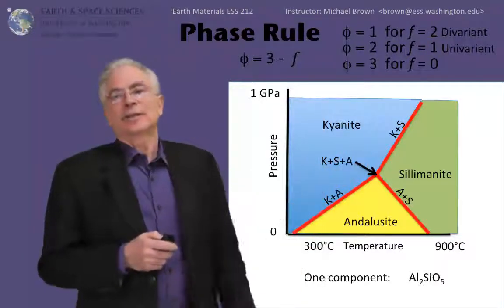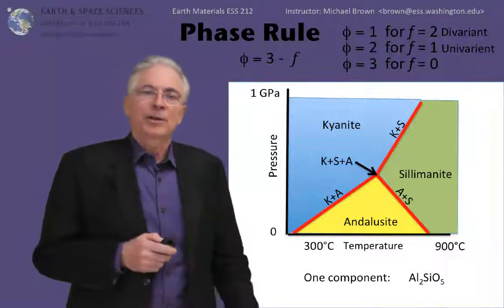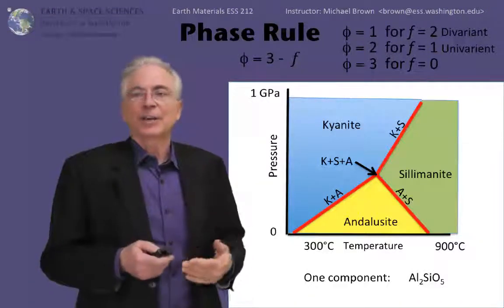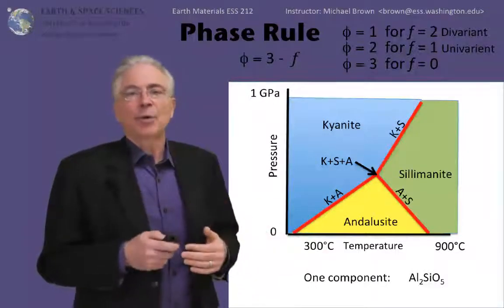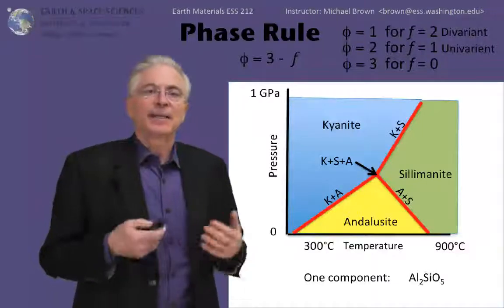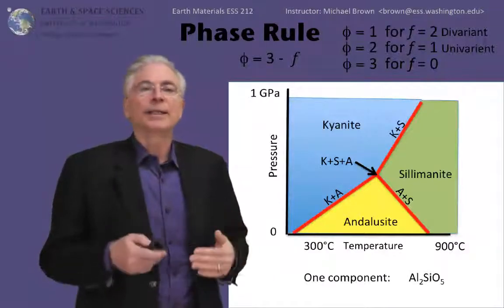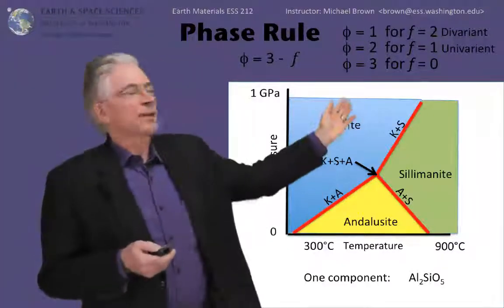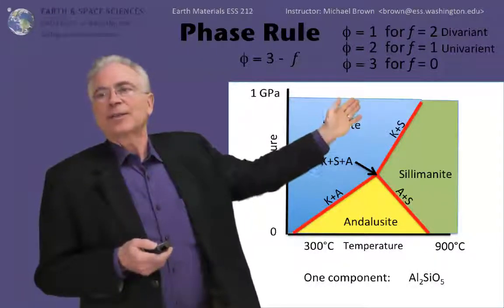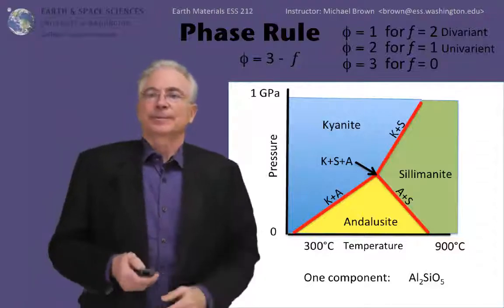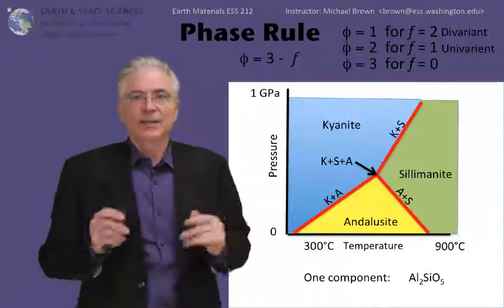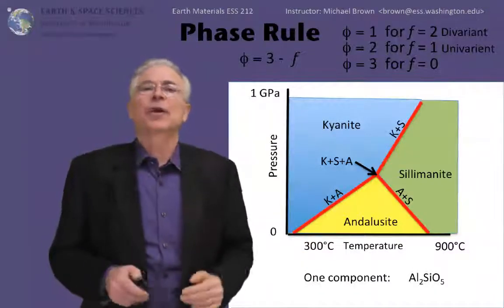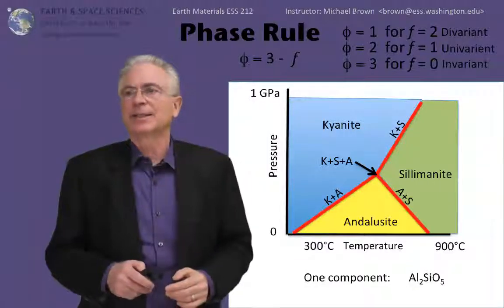Now at the invariant point, all of the univariant reactions come together and only at that point, kyanite, sillimanite, and andalusite are in equilibrium with each other. And that corresponds to three phases for F equals zero. Simple enough. There's the application of phase rule. Let's move on to a little more complicated system.